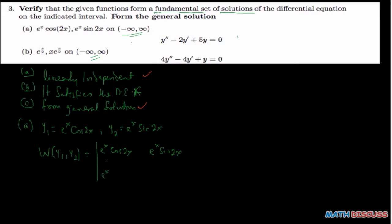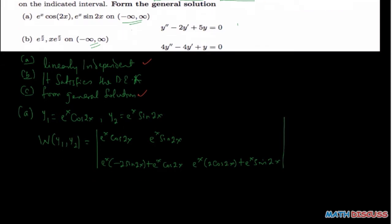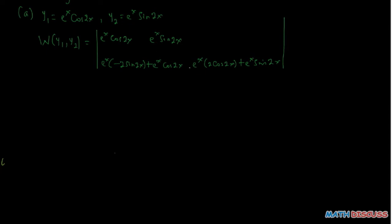Applying the product rule here: the derivative of e to the power x cosine of 2x is e to the power x times cosine of 2x minus 2 sine of 2x, plus e to the power x cosine of 2x. Then the derivative of e to the power x sine of 2x is e to the power x times 2 cosine of 2x, plus e to the power x sine of 2x. So this is what we have when we find that row.